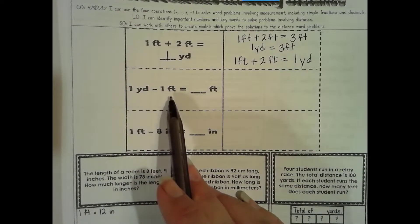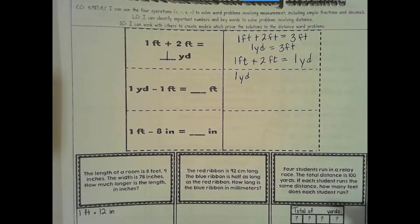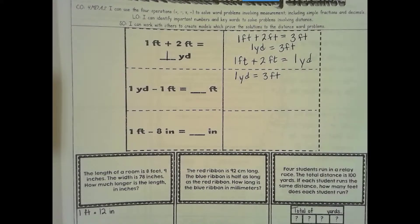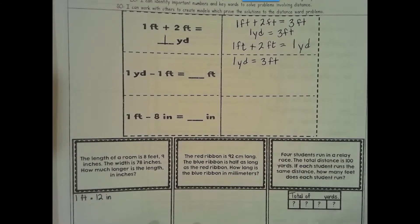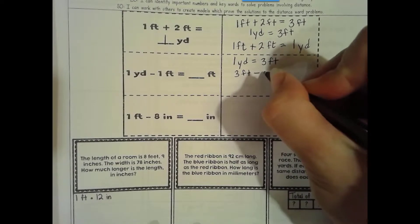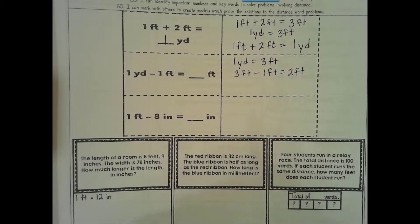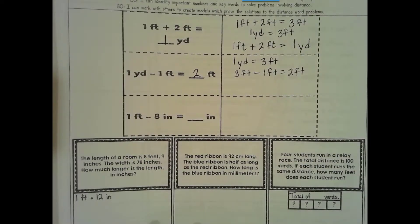Here, 1 yard take away 1 foot is how many feet? Well, 1 yard, we can't do the subtraction if they're in different units. So 1 yard is equal to 3 feet. If you don't remember this, you can look back in your trimester 2 notes to look for the conversions. 3 feet take away 1 foot equals 2 feet. So that means 1 yard take away 1 feet is 2 feet.